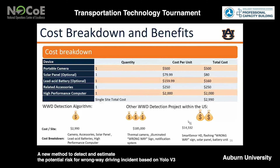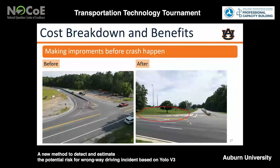By using our system, we can spend less money and find more high-risk locations. As Bei Jia earlier mentioned, we used to find problems after a wrong-way driving crash happened, which is very passive. If we can find more locations with recurring wrong-way entries and by implementing quick fixes, we can make wrong-way entry impossible. So if we don't have any more wrong-way entries, we don't have to worry about wrong-way driving crashes.